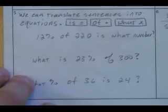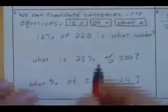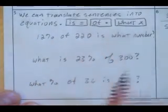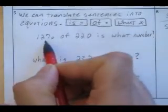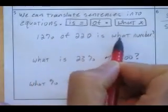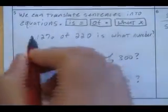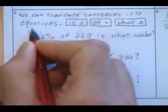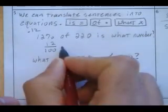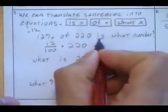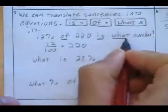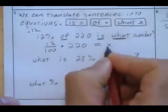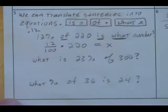We can translate sentences into equations by, wherever we see an is, we can substitute with an equals. Where we see the word of, we put a multiplication sign, and what, we put an x. For instance, we have 12% of 220 is what number? Remember what percent means. That's per 100, or divided by. Twelve-hundredths of 220 is what? Multiply it out, you can find what x is.